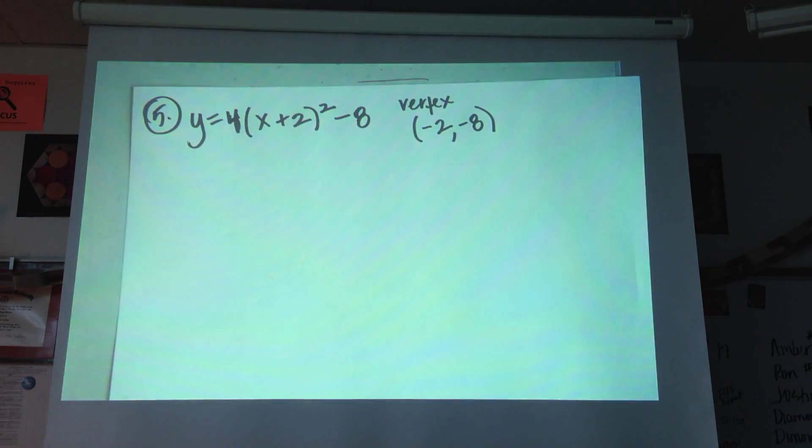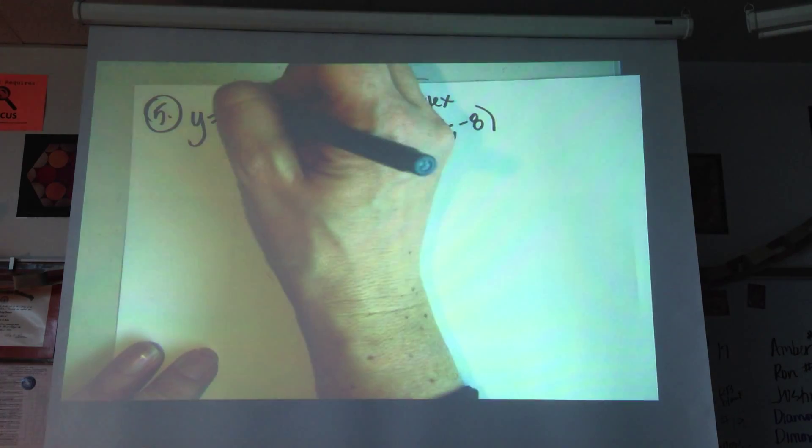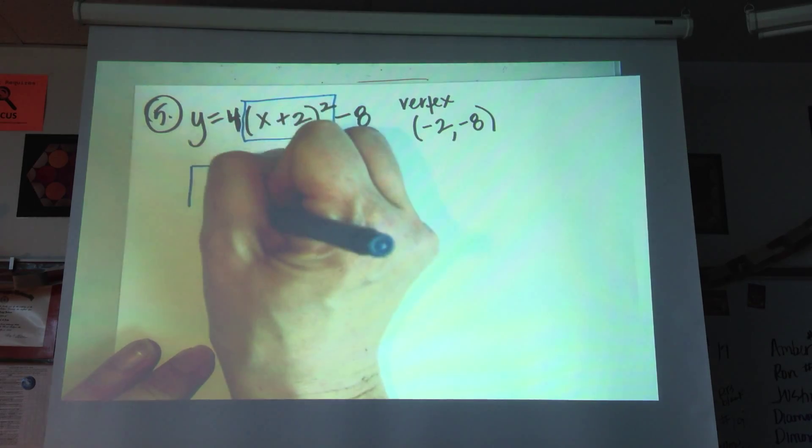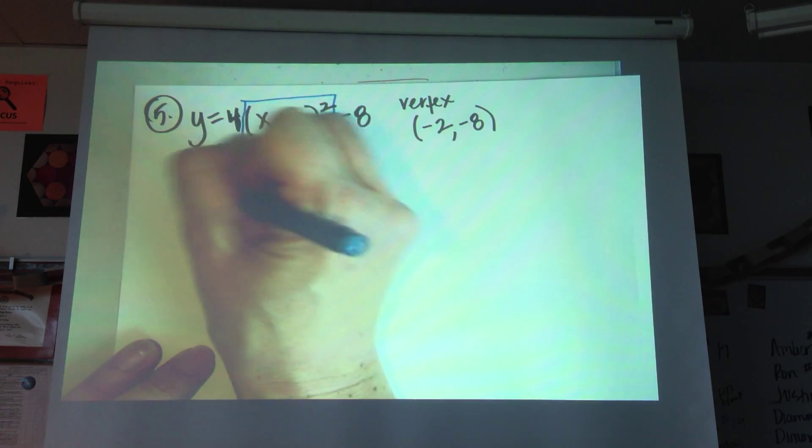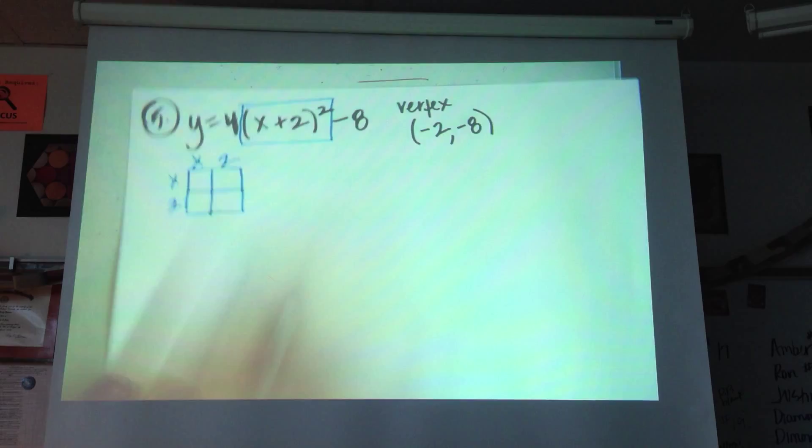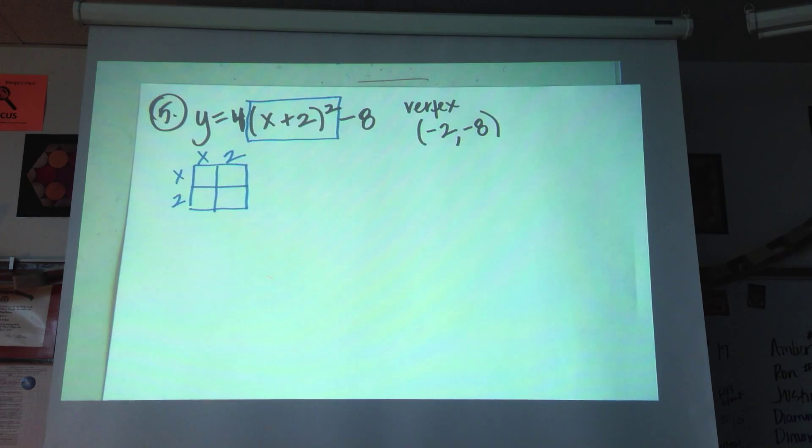Now, that's not what this assignment is about. This assignment is about taking something out of vertex form and converting it into our standard form, y equals ax squared plus bx plus c. So I'm going to draw my box, and I'm going to multiply the binomial x plus 2 by itself. Here's a couple more if anybody needs this.